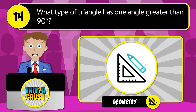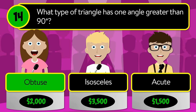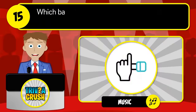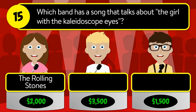Question number fourteen: what type of triangle has one angle greater than 90 degrees? Is it obtuse, isosceles, or acute? The correct answer is obtuse. Question number fifteen: which band has a song that talks about the girl with the kaleidoscope eyes? Is it the Rolling Stones, Led